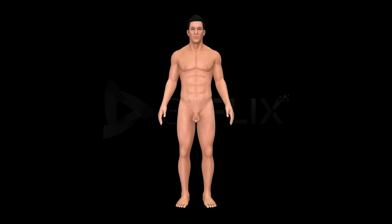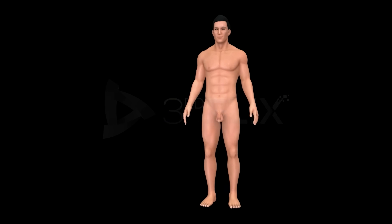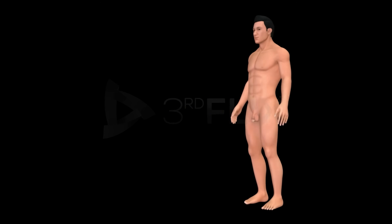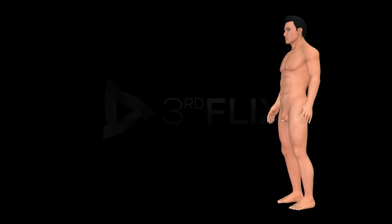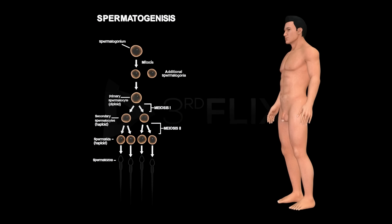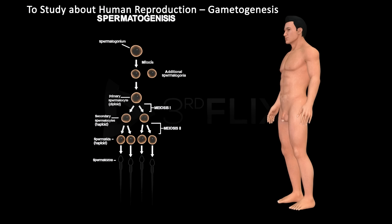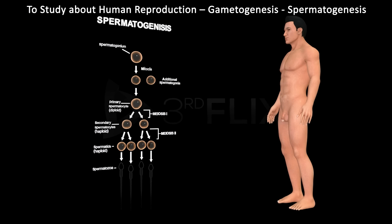Chapter: Human Reproduction. Topic: Gametogenesis — Spermatogenesis. Objective: to study about human reproduction, gametogenesis, and spermatogenesis.